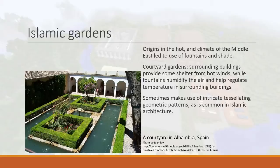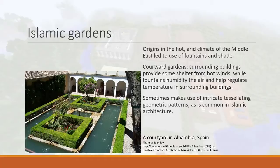Moving on to other cultures: the Islamic garden originated in the hot, arid climates of the Middle East, which led to the use of fountains and shade. Fountains spray water into the air, humidifying it and reducing the air temperature. Shade provides shelter from the sun. Many gardens were built into courtyards — an open area in the middle of a building with fountains and gardens, where the building provides shelter from hot winds.